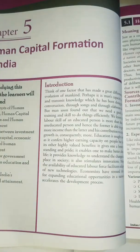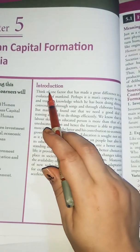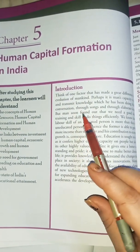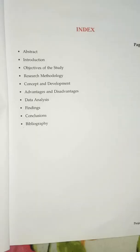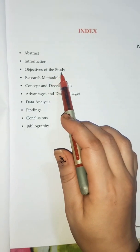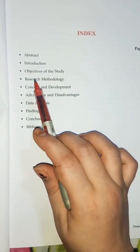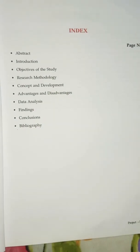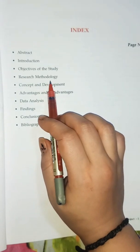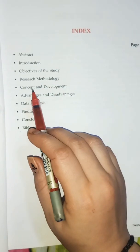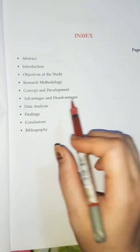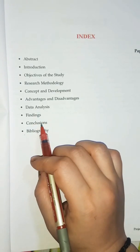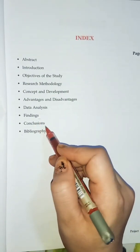We will start with an introduction — every chapter of the book has an introduction, and you will write a one-page introduction for your topic. After that, write your objective — why have you taken this topic? Then research methodology — what method you used, such as survey method, primary data, secondary data — all things you have learned in statistics. After that: concept and development of your topic, advantages, disadvantages, data analysis, findings, conclusions, and bibliography.